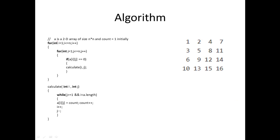Initially we consider a 2D array of size n cross n and count initialized to 1, with all elements in the array initially 0. The for loop traverses all elements and checks if the value at that position equals 0. If it is 0, then we call calculateIJ, taking two parameters i and j.